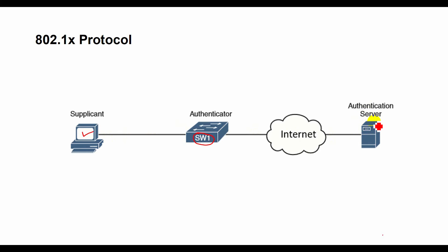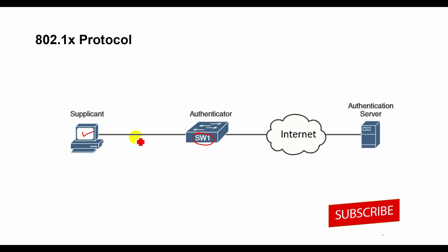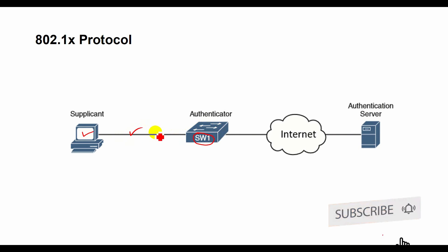The Authentication Server is a trusted server that performs the authentication mechanism of network access by receiving, processing, and responding to various requests from clients. It decides whether to allow or deny access services and apply various settings to the user. The authentication server validates the identity of the client and notifies the switch whether the client is authorized to access the LAN and switch services. Because the switch acts as the proxy, the authentication service is transparent to the client.